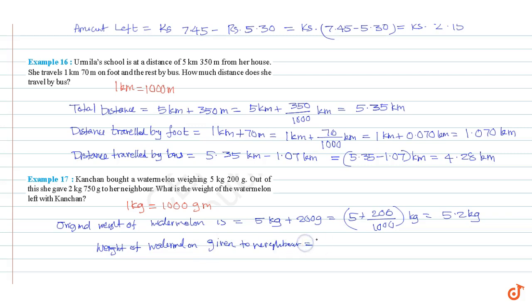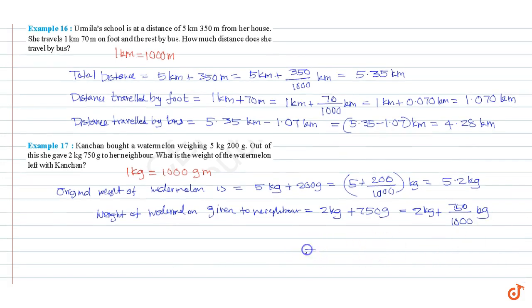Weight of watermelon given to neighbor. This is equal to 2 kg plus 750 grams, which is equal to 2 kg plus 750 divided by 1000 kg. This is equal to 2.75 kg.